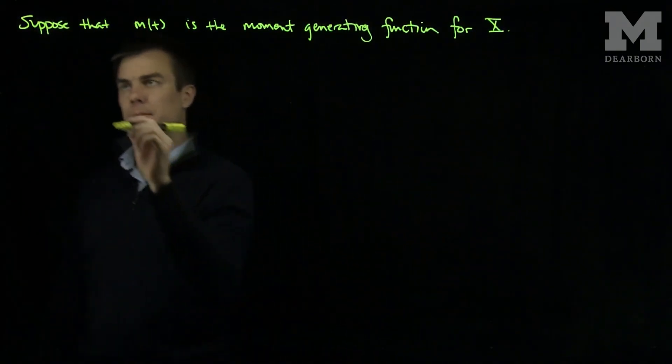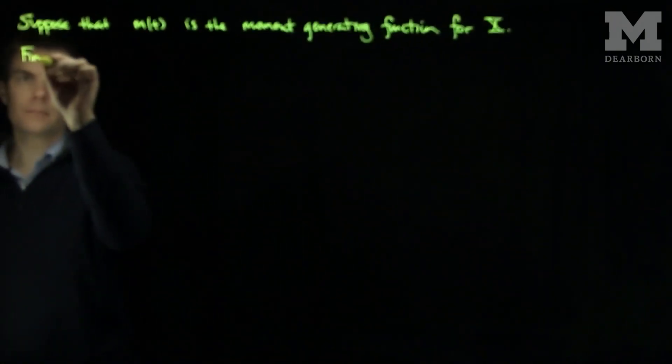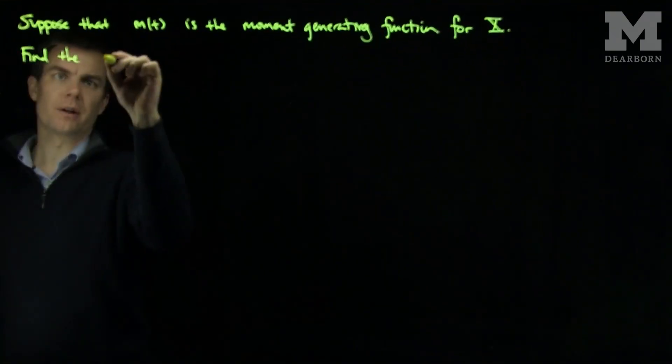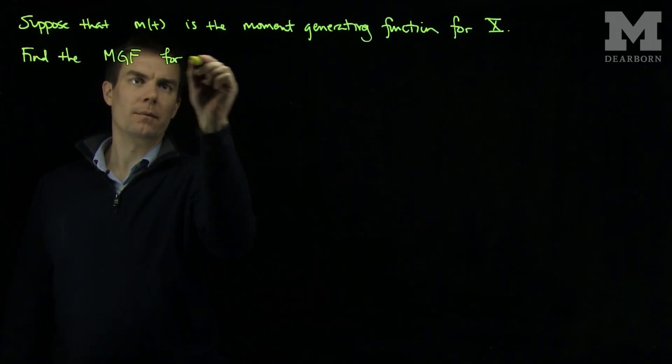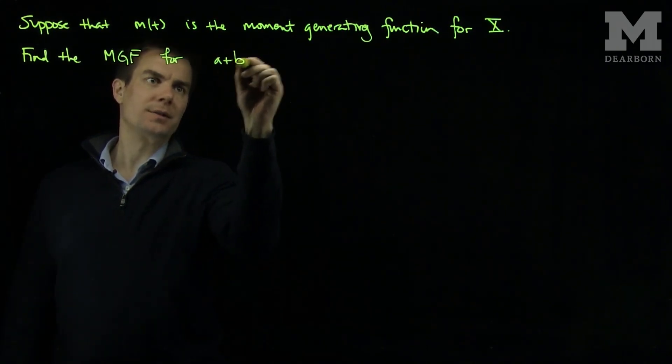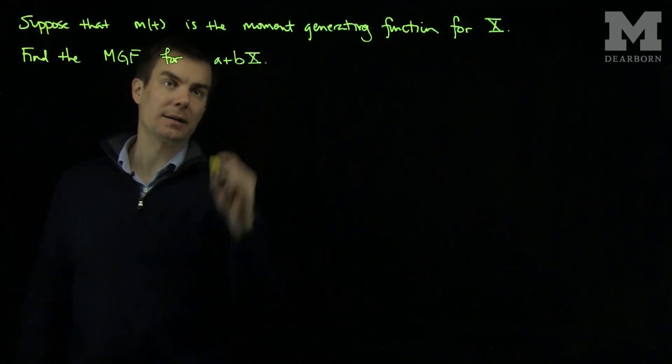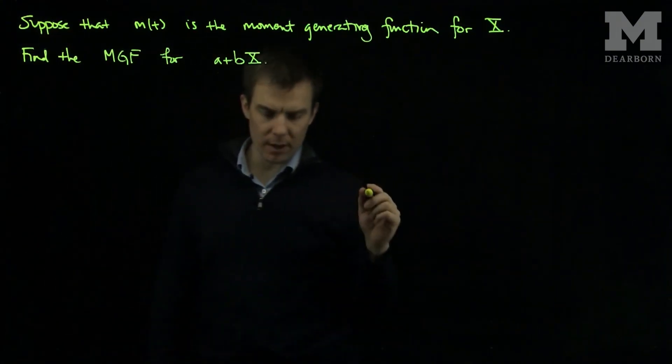Let's find the moment generating function MGF for a+bX, where a and b are constants.